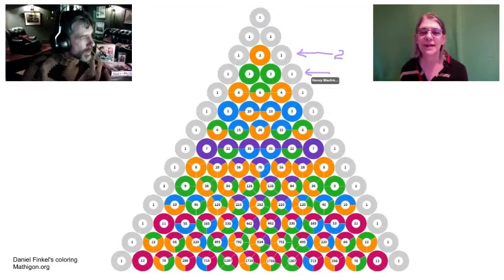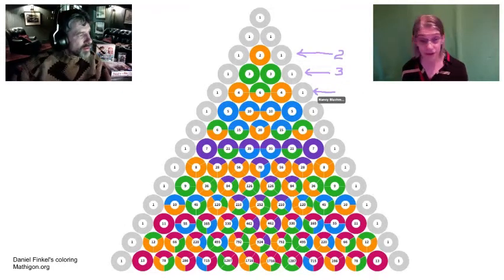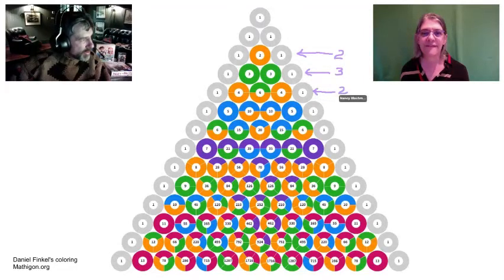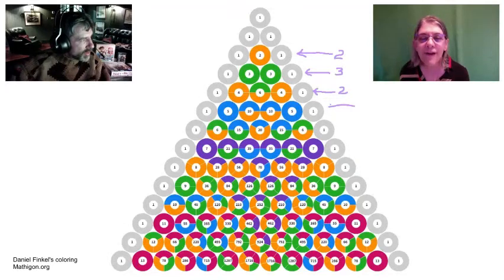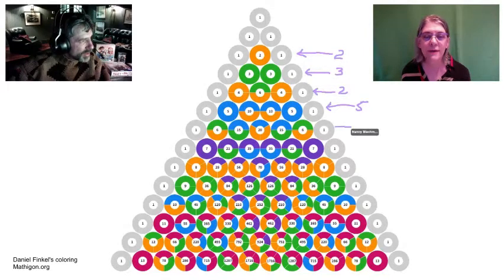Now this row starts getting more interesting — we have four and a six. The greatest common factor of these, the thing they both have in common, is two. And for this row? Five. And for the next row, we're stuck — so maybe it's just one.